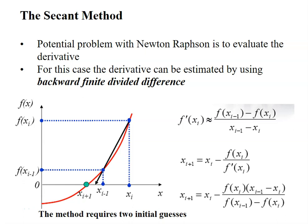Hello guys. So this is the final method in the Roots of Equation chapter. We call it the secant method. So why do we need this secant method?